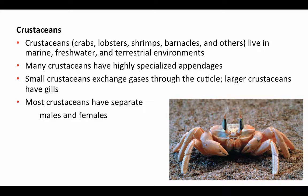Now let's take a look at the crustaceans. Remember that insects are actually a subgroup of crustaceans — we now have the clade pancrustaceans because crustaceans are paraphyletic and should include the hexapods. Crustaceans include crabs, lobsters, shrimps, and barnacles. They generally live in marine environments, but can also be found in freshwater and even terrestrial environments.